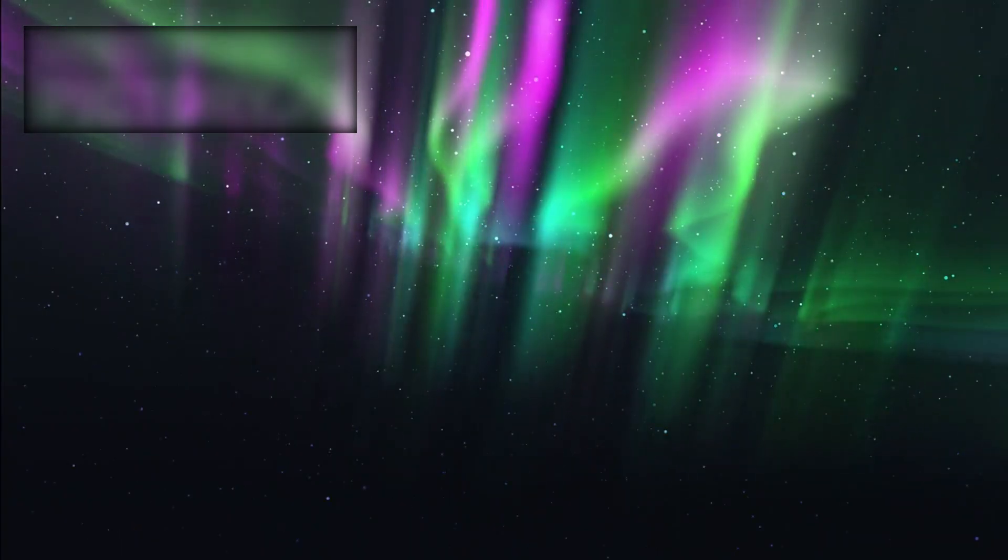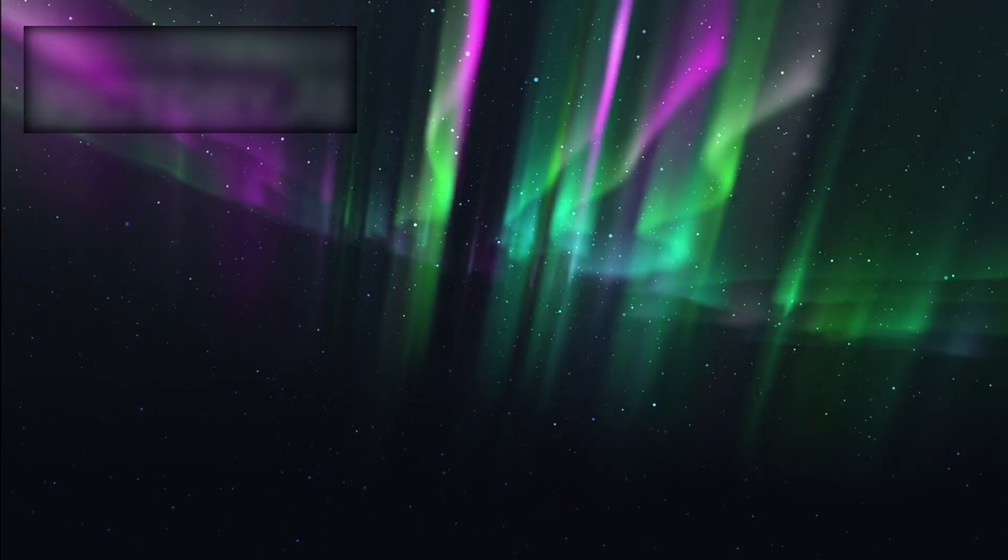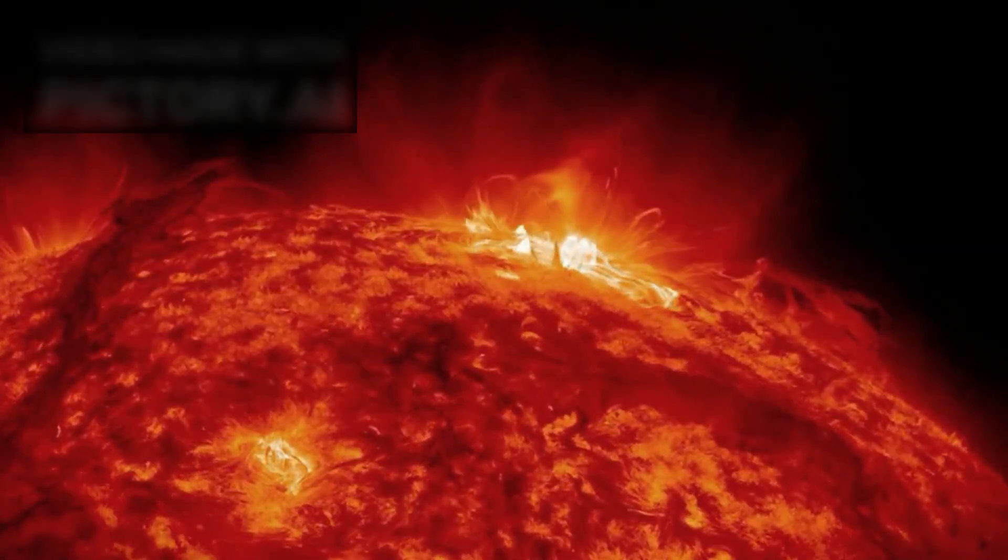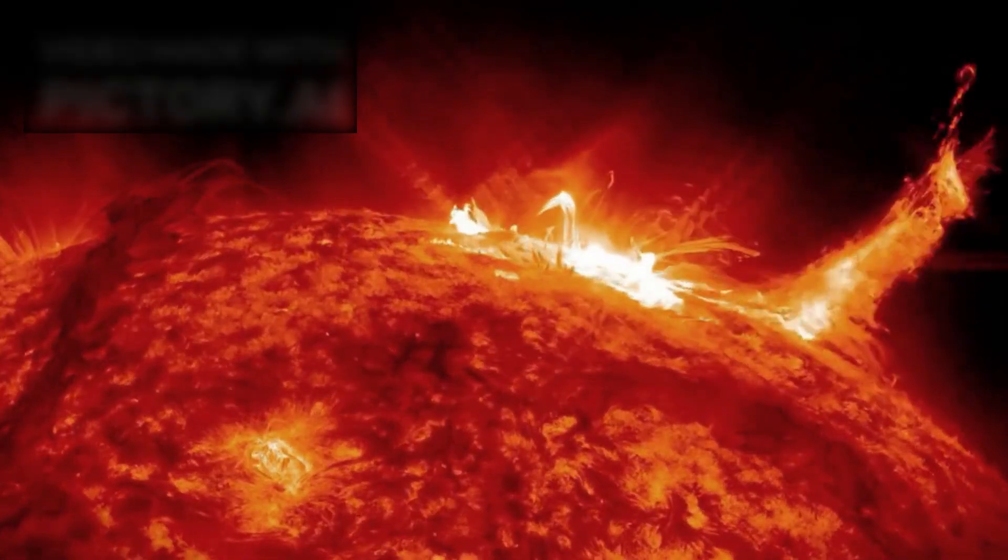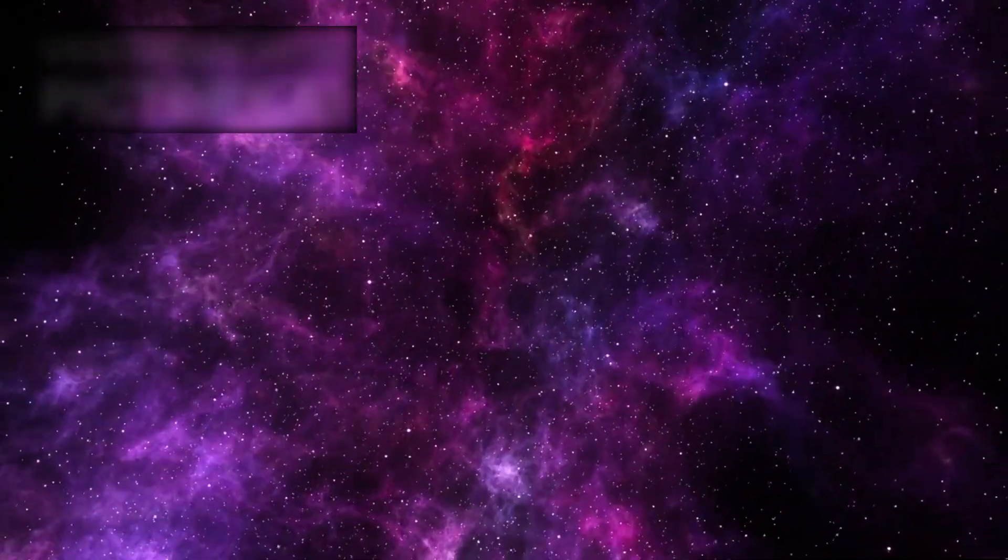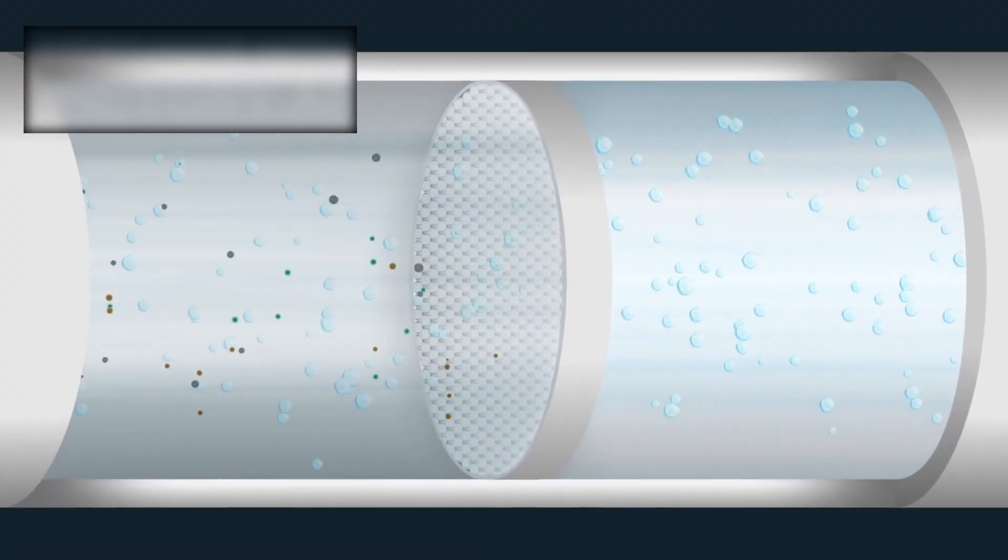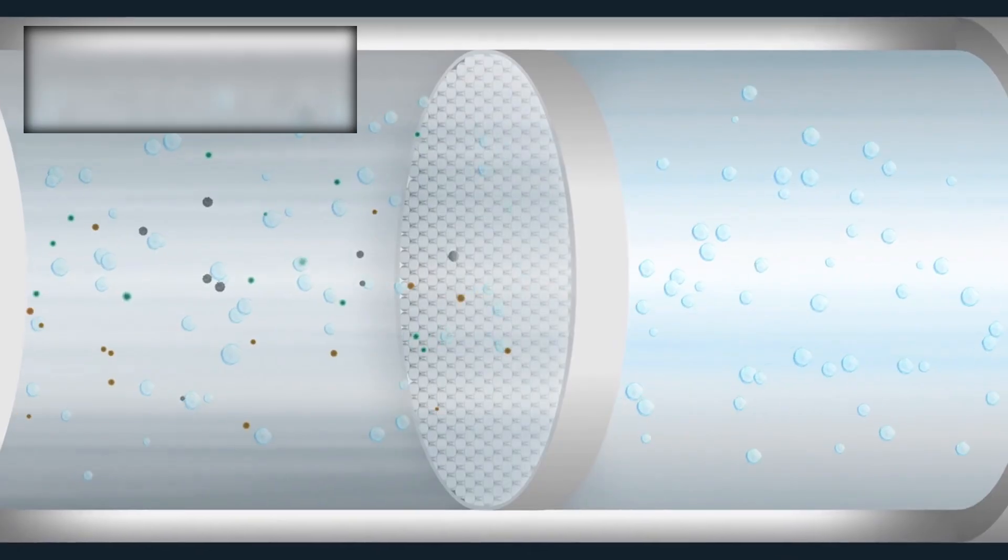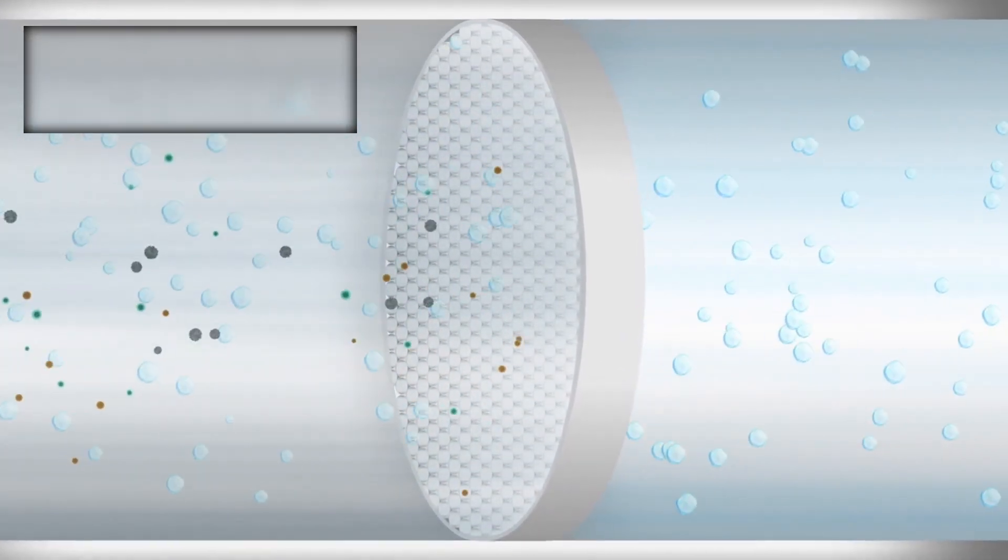One of the most startling findings came from its measurements of cosmic rays. Scientists expected galactic rays to surge once the probe left the heliosphere. Instead, they dipped. The pressure wall seemed to act as a filter, blocking or redirecting high-energy particles from the galaxy.